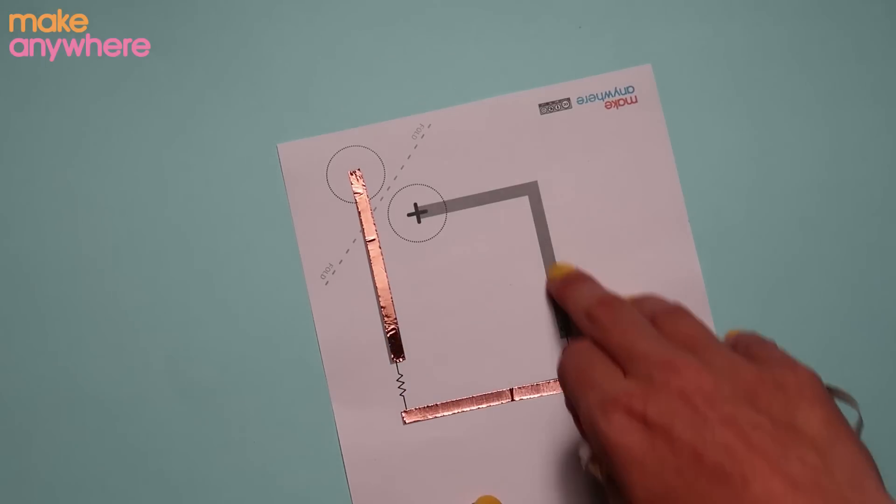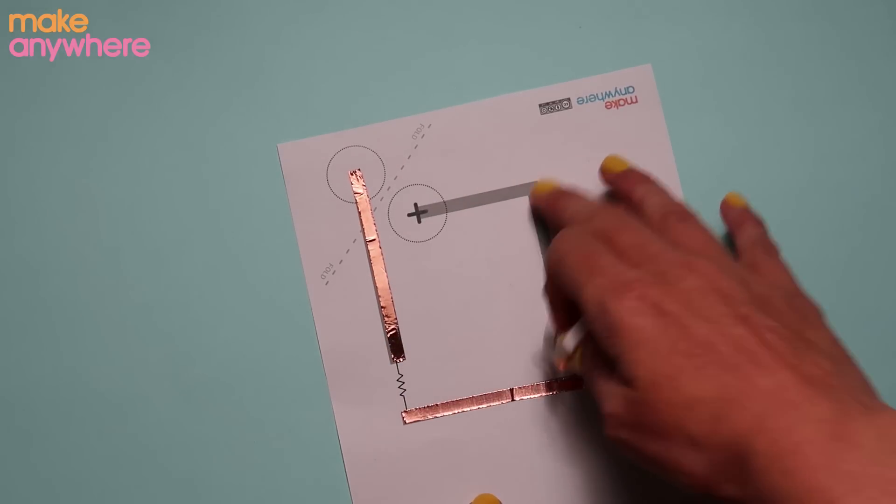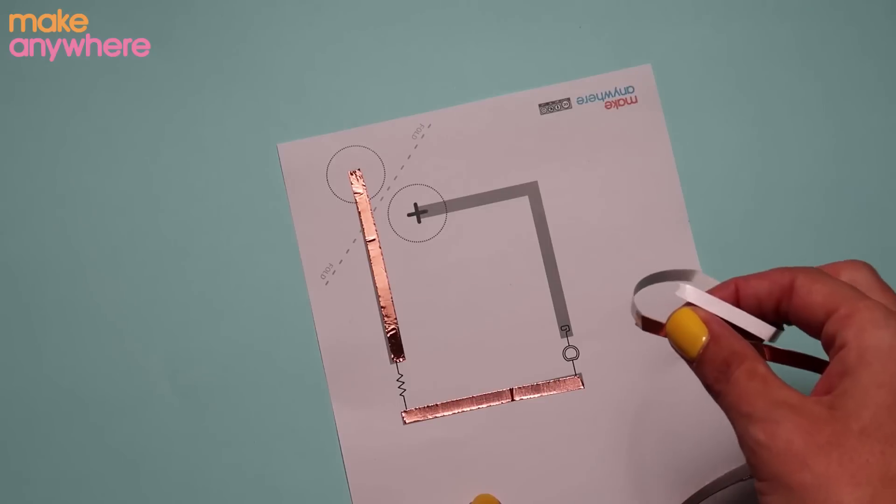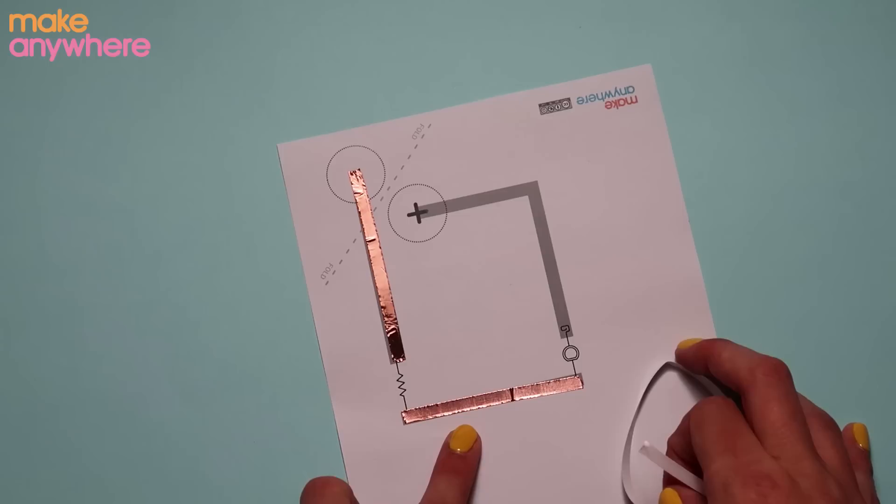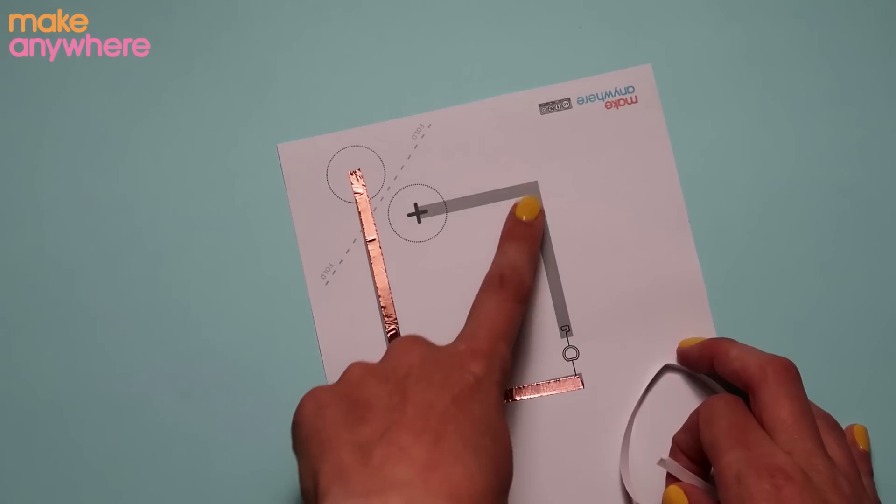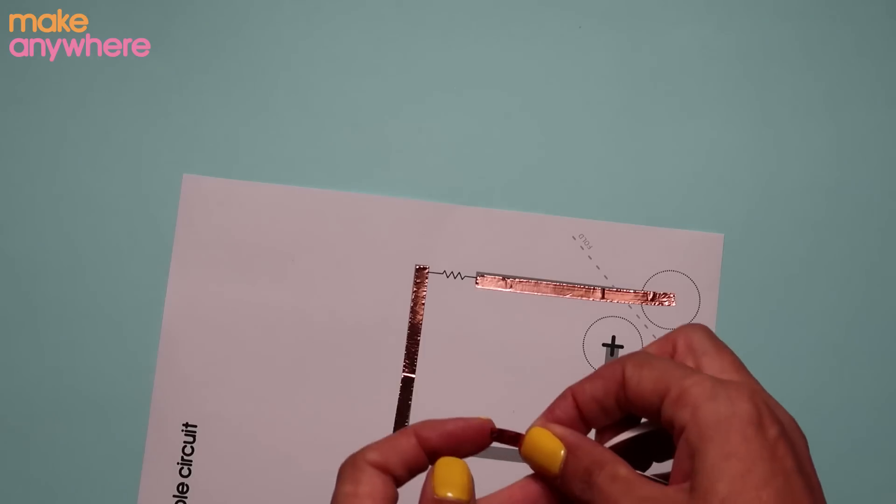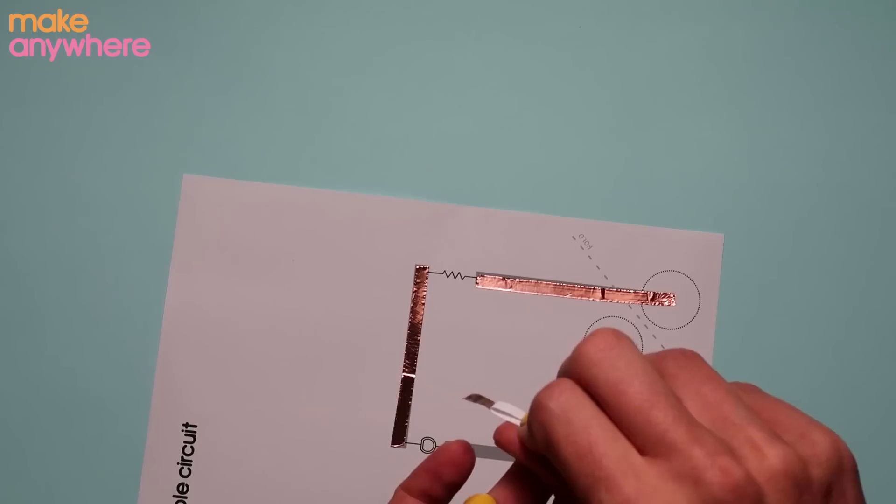Our last bit is to do this part here which has a bend in it. We need to make sure we're using copper tape that it doesn't break or rip because we need the power to go directly through it. If there is a rip or a cut, it'll be a break in our circuit and our LED won't light up. So I'm going to show you how to do corners. We'll start the same way, bending back your paper.